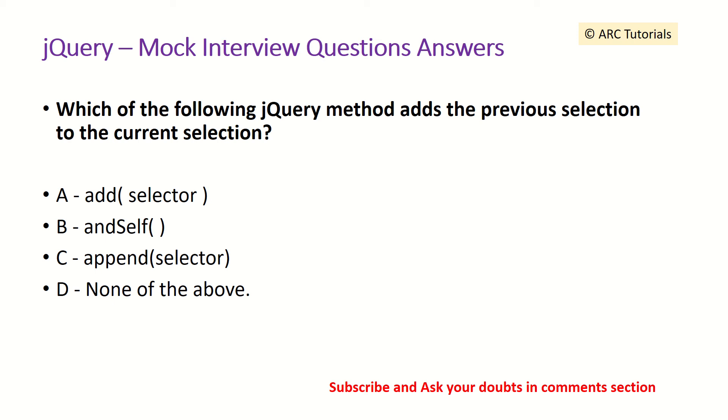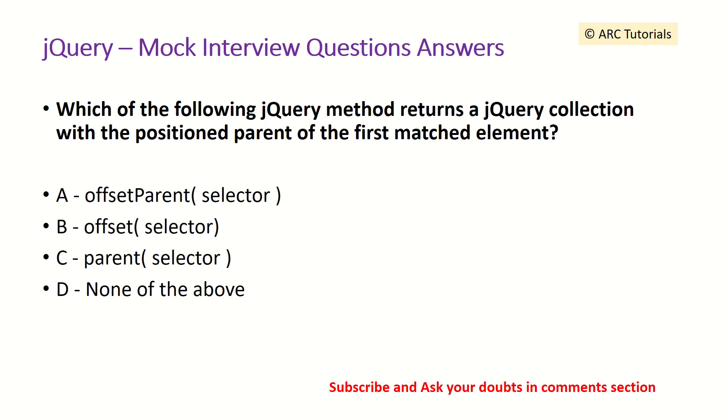AndSelf is the one which will take the previous selection and add it to the current selection. Which of the following jQuery method returns a jQuery collection with the position parent of the first matched element?